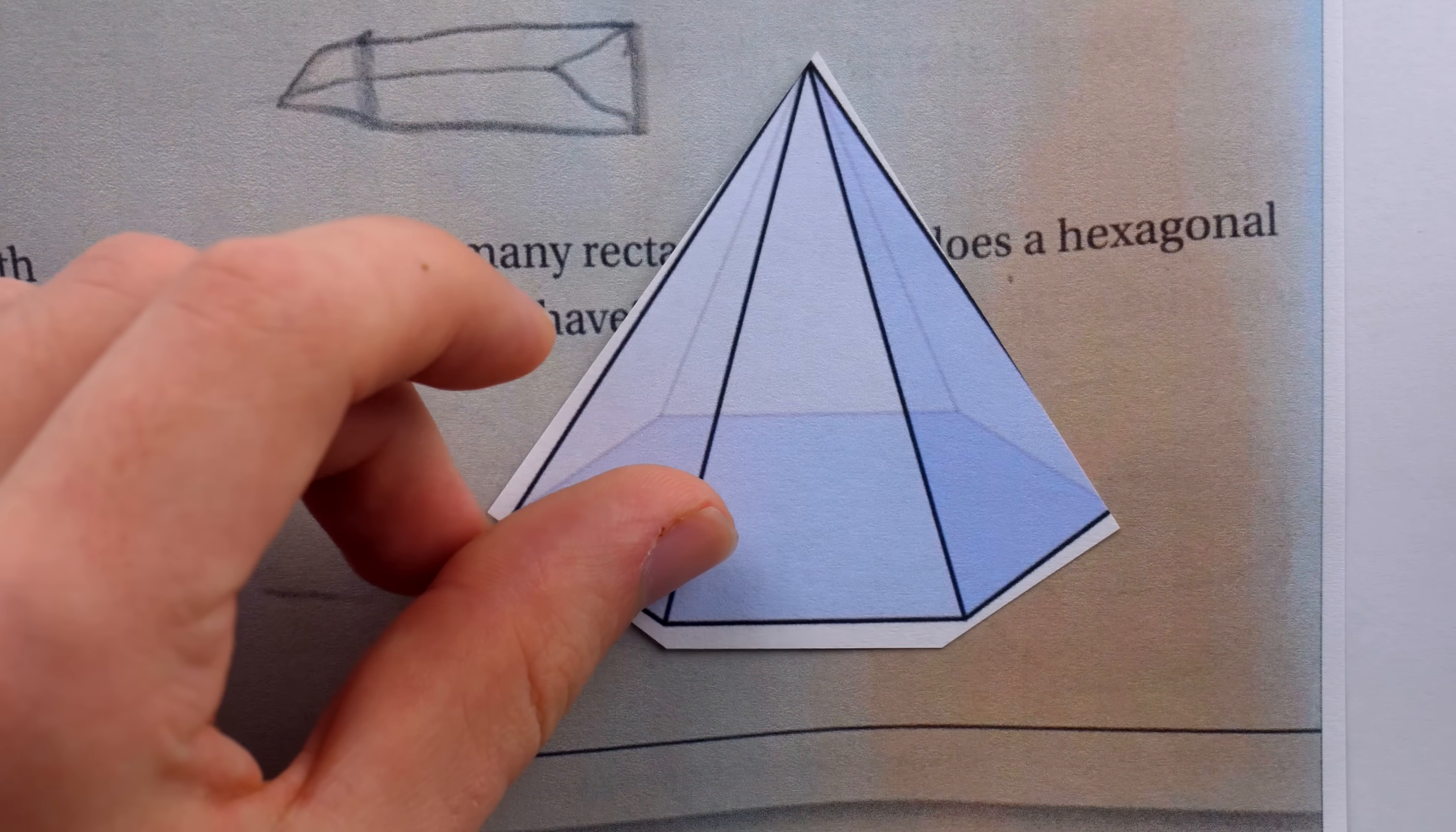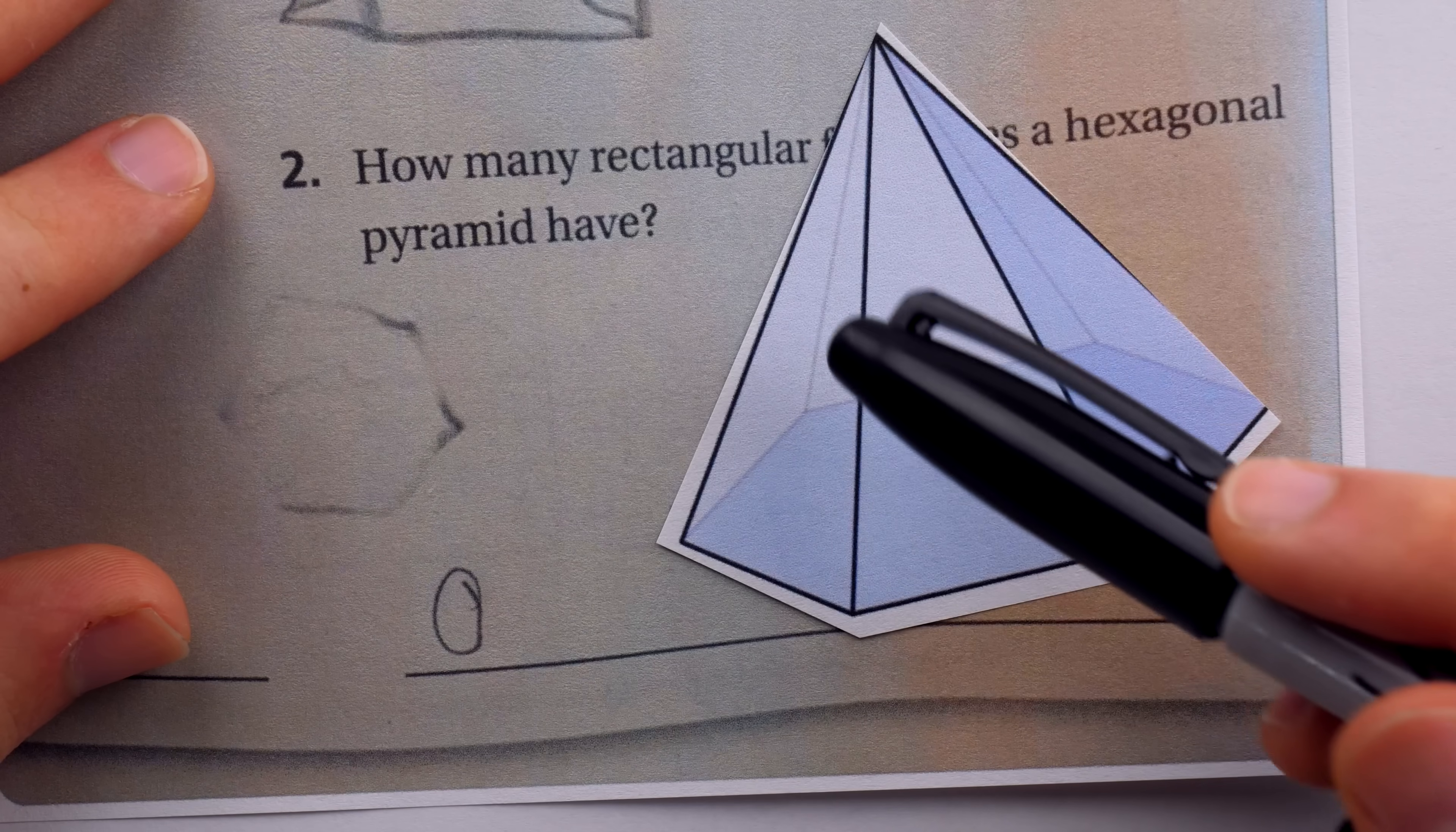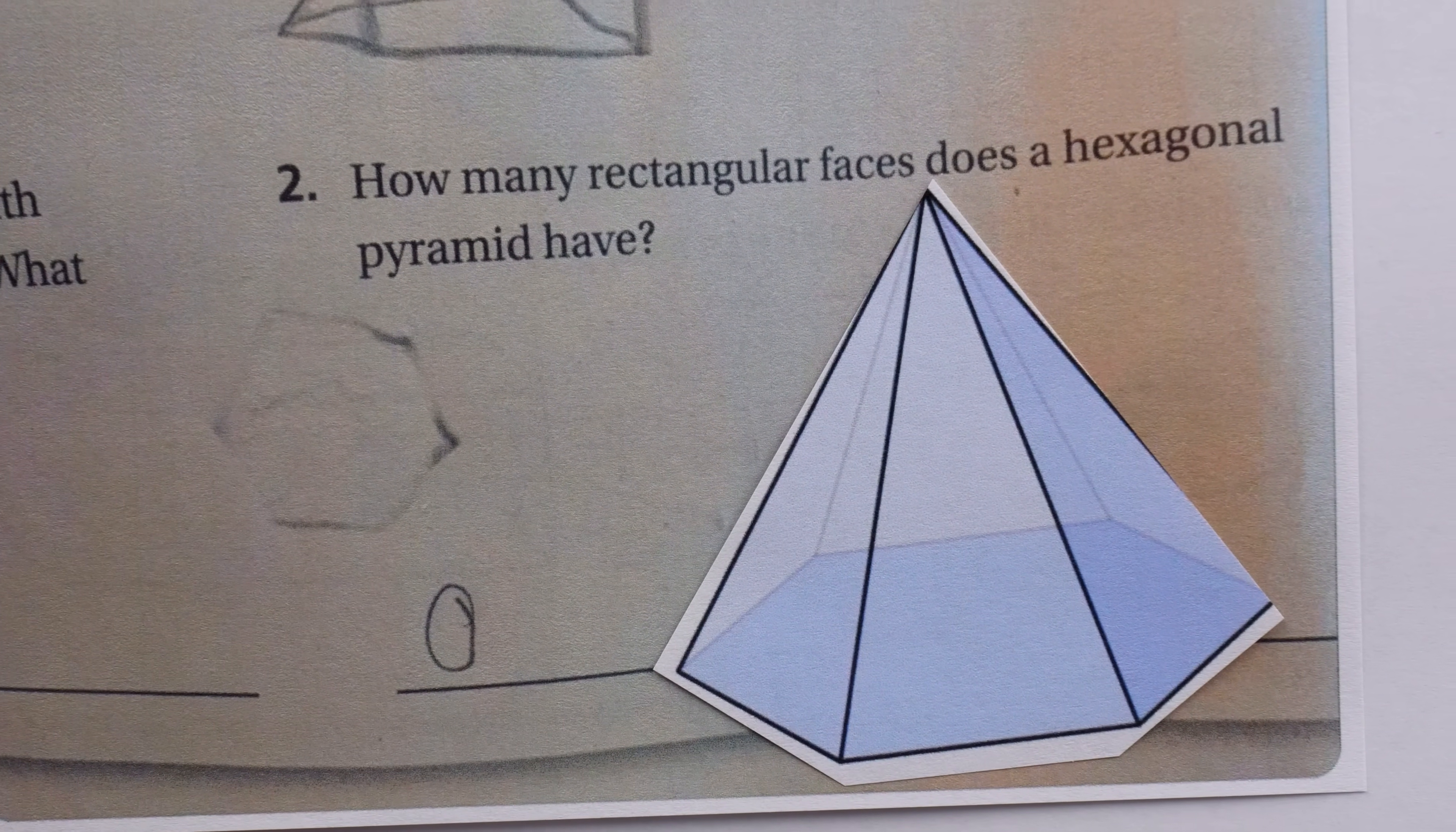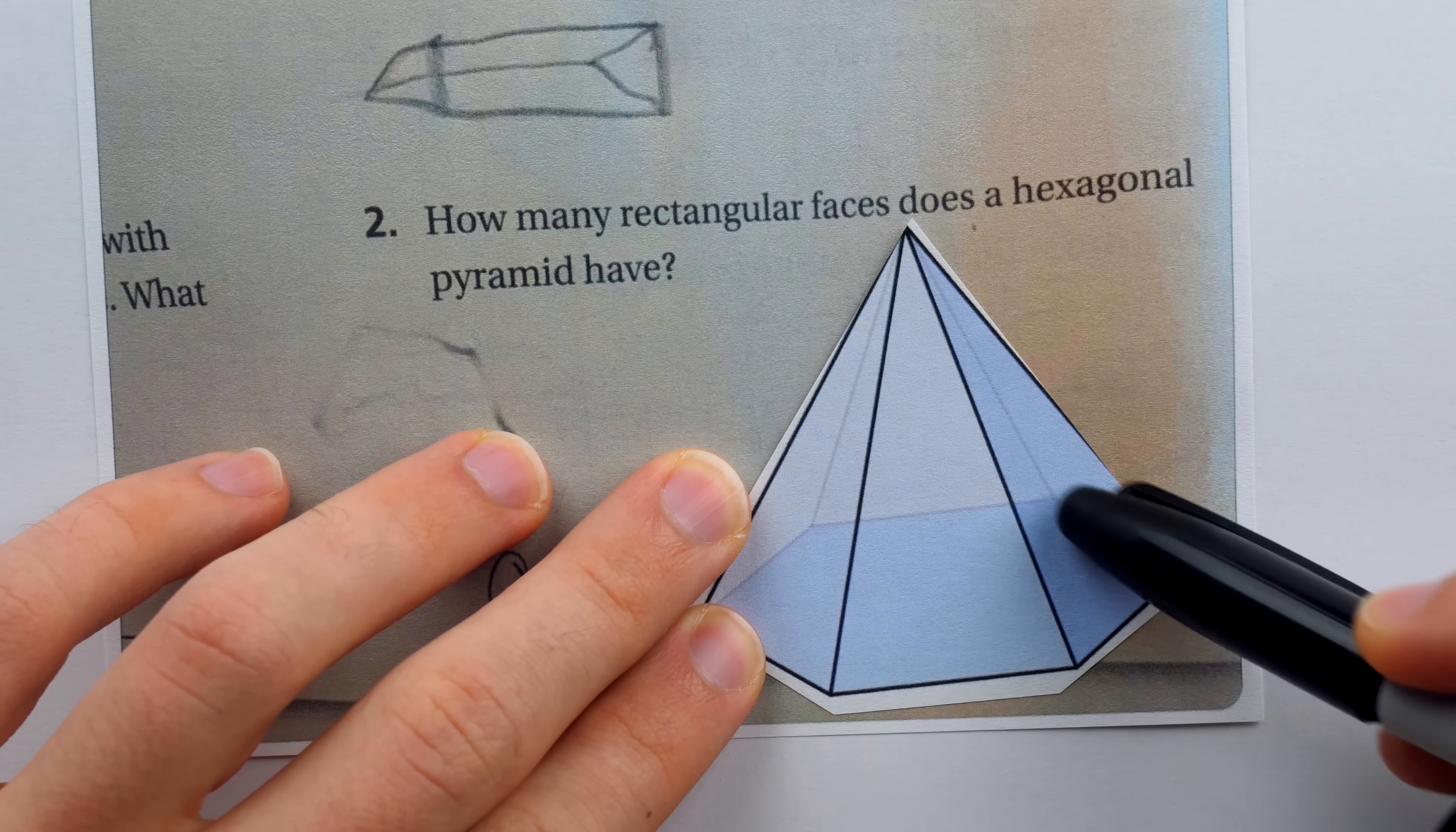We can complete this exercise together now. And sure enough, there's not even a ping on even the most sensitive rectangle radar when looking at a hexagonal pyramid. The student's answer of zero rectangular faces was correct. The teacher argued that the correct answer was in fact six, that there were six rectangular faces which could be found in the base of the pyramid.